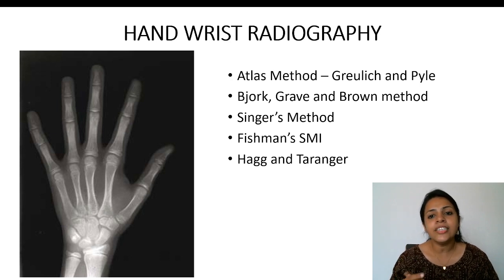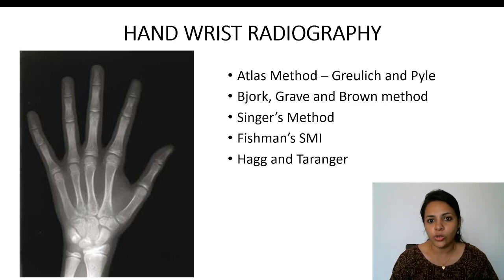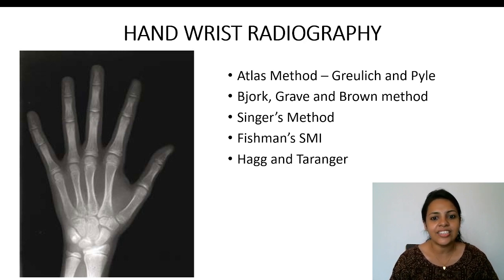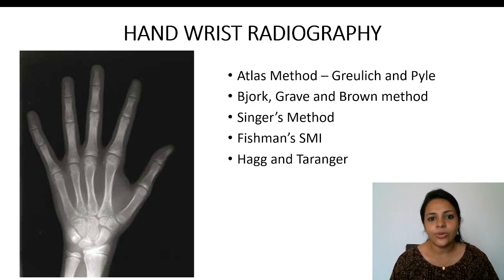Under hand wrist radiography, various people have given various techniques. There is the Atlas method by Greulich and Pyle, the Tanner-Whitehouse method, Grave and Brown method, Singer's method, Hagg and Taranger's method, and also Fishman's skeletal maturity indicator. In today's session, we will discuss Fishman's skeletal maturity indicators.